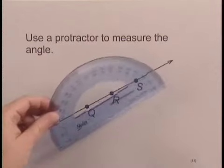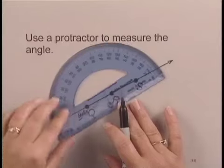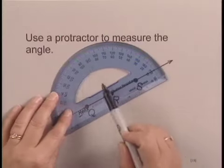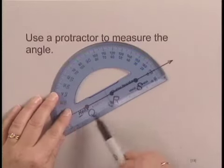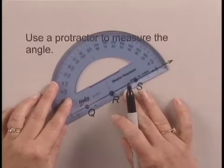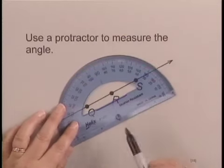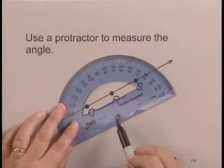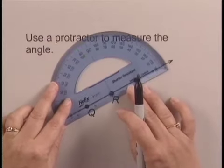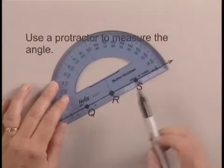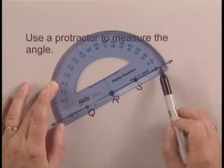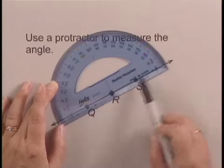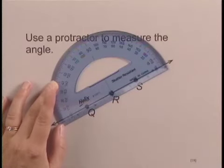So we will line up the vertex of the angle with the intersection of the two lines on the protractor, which is also marked on my protractor by a circle where the lines intersect. You'll notice that this angle does line up directly with the straight line at the bottom of the protractor.